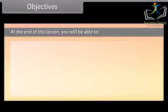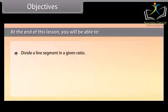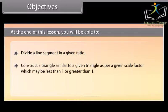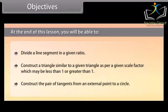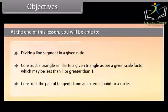At the end of this lesson you will be able to: divide a line segment in a given ratio; construct a triangle similar to a given triangle as per a given scale factor which may be less than 1 or greater than 1; and construct a pair of tangents from an external point to a circle.